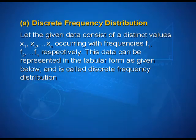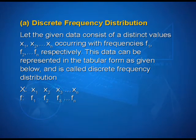Let us first discuss discrete frequency distribution. Let the given data consist of n distinct values x1, x2, ..., xn occurring with frequencies f1, f2, ..., fn respectively. This data can be represented in tabular form and is also called a discrete frequency distribution, with xi values x1, x2, ..., xn and corresponding frequencies f1, f2, ..., fn.